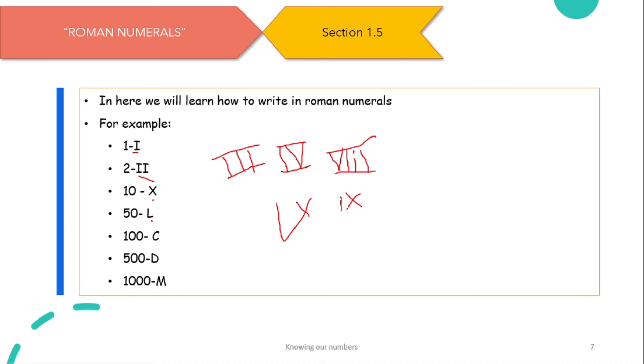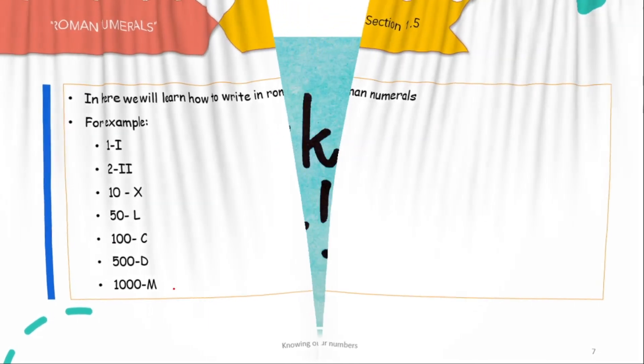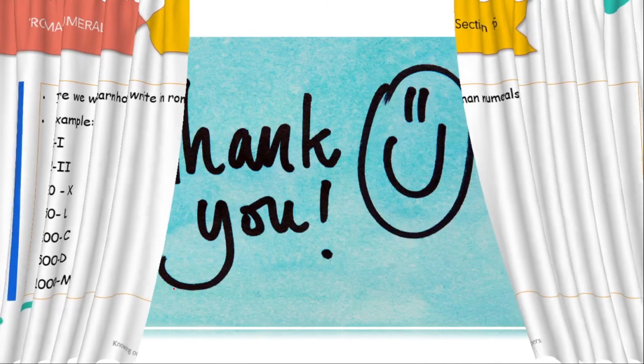But 9 we write in a different form. We put X. X means 10. Here it is. And then we put a 1 there. So this means 9. So I'll just write clearly. Yeah, and that's it. So 50 we write it as L. Then 100 comes out as C. 500 D. And 1000 M.